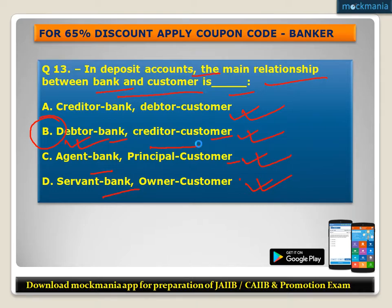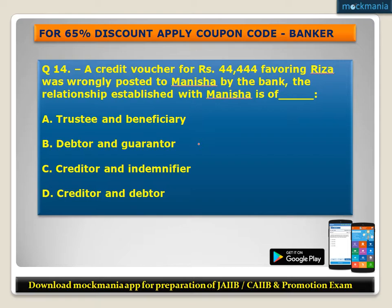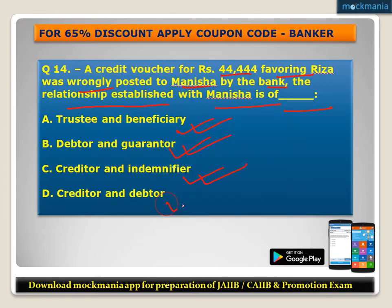Question number fourteen: A credit voucher for Rs. 44,444 favoring a customer was wrongly posted to Manisha by the bank. The relationship established with Manisha is? Options: A) trustee and beneficiary, B) debtor and guarantor, C) debtor and indemnifier, D) creditor and debtor. The correct answer is D - creditor and debtor. The bank is the creditor and Manisha is the debtor.